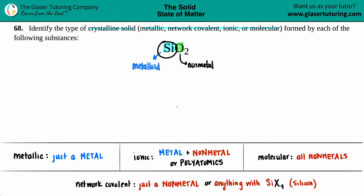If you spot silicon as the first element, it's always going to form a network covalent crystalline solid. So SiO₂ is a network covalent solid. We narrowed it down to ionic or network covalent, but since it's specifically silicon, anytime you see SiO₂ or SiO₄, it forms a network covalent solid.